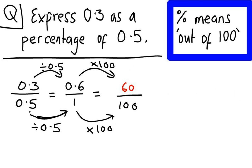Now remember, not quite finished here yet. As always, we need to turn this into a percentage. And seeing as percent means out of 100, 60 out of 100 is the same as 60%. So 0.3 is 60% of 0.5. I'm going to do one more example.